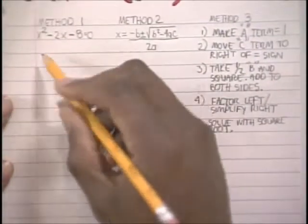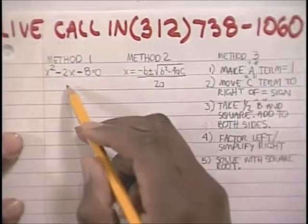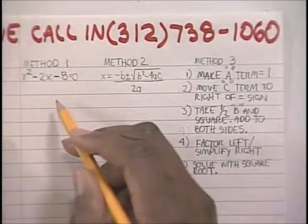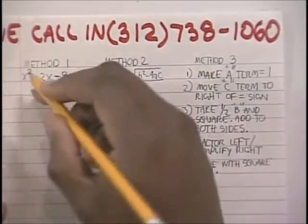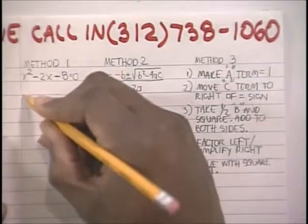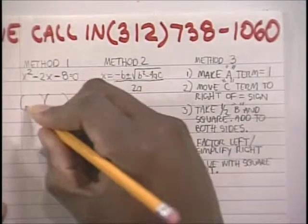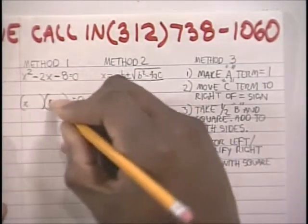Alright, so this is a quadratic equation: x squared minus 2x minus 8 equals 0. We're going to solve that using a method called factoring. So you set up two binomials equal to 0. You factor x, x.